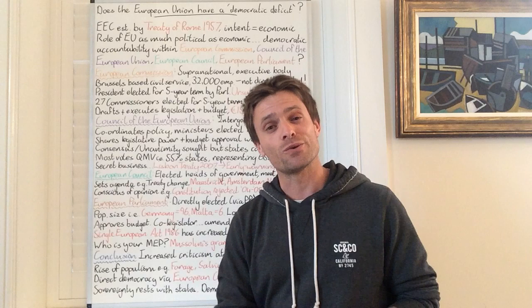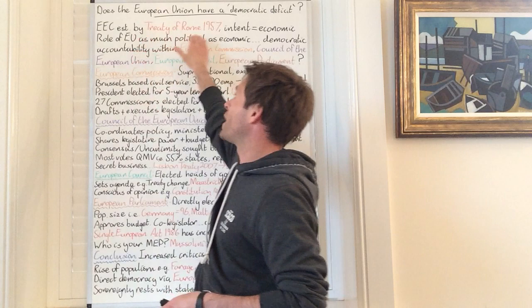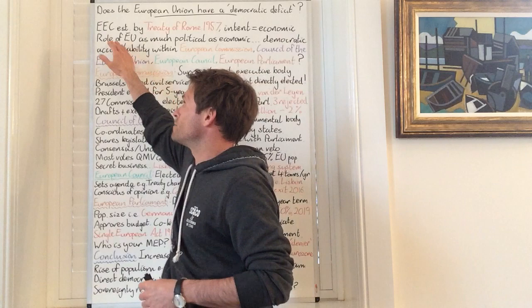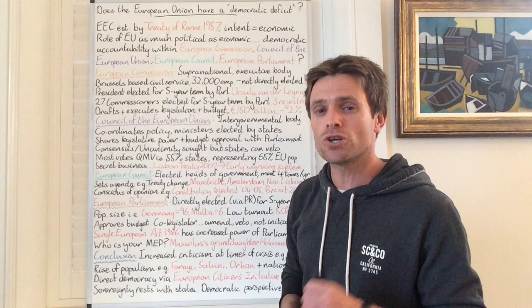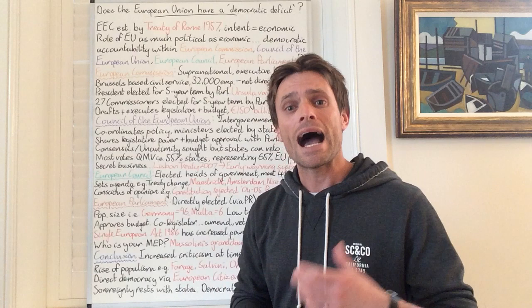Let's begin with a brief introduction. The European Economic Community was established by the Treaty of Rome 1957, and the EEC was very much the forerunner of the modern-day European Union. As the name suggests, it had an economic intent. The six original signatory countries were intent on binding their economies so as to avoid another major conflict happening on European soil.